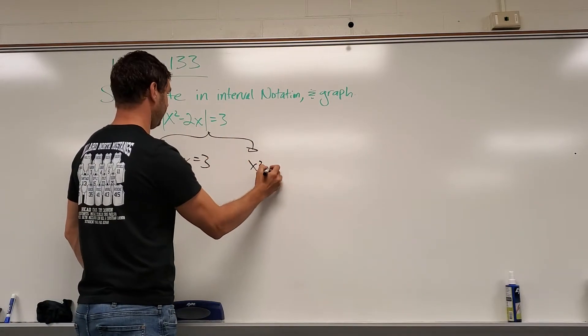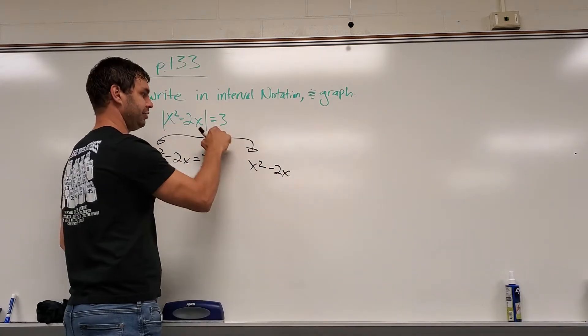And then the second one, same thing, x squared minus 2x, but this time we set it equal to negative 3.